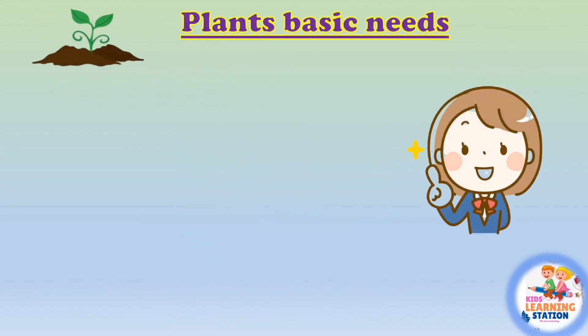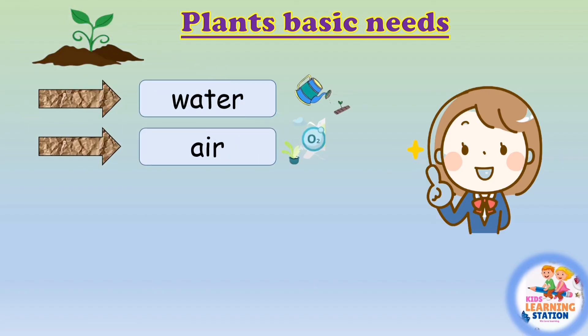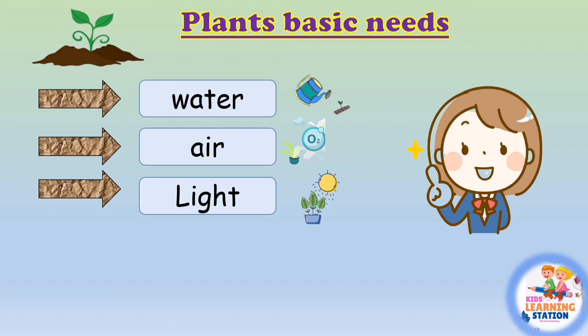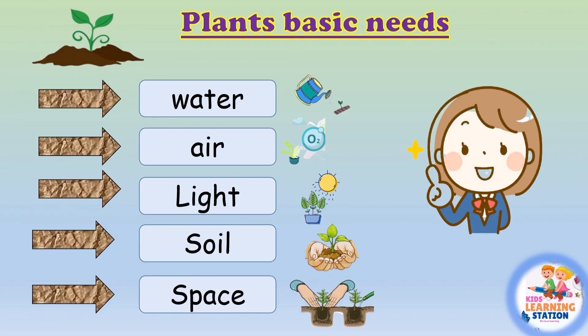Let's revise one more time the basic needs of a plant to grow healthy. Number 1: Water — plants need water. Number 2: Air — plants need air. Number 3: Light — plants need light. Number 4: Soil — it has nutrients. Number 5: Space — plants need space.